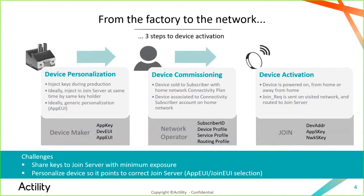For a device to get from the factory to the network securely and be activated, there are three big steps. The first is device personalization in the factory, which most often involves the device maker injecting keys into the device, as well as identifiers like the DevEUI and AppEUI in LoRaWAN 1.0, or JoinEUI in 1.1. Ideally, at the time of key injection, you manage to load them on the cloud side with as few players and steps as possible.